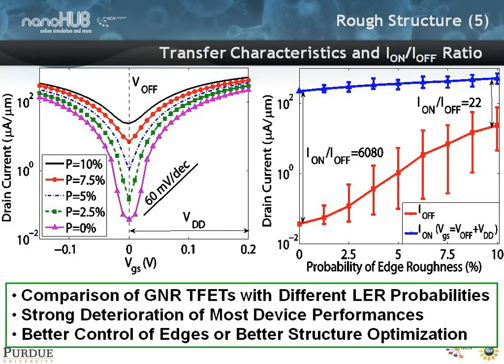There is a strong deterioration of device performance. On average, a device with no line edge roughness (purple) versus 2.5% (green), 5% (blue), 7% (red), and 10% (black) shows that the sub-threshold swing deteriorates really badly from being sub-60 mV per decade to something that is much worse.